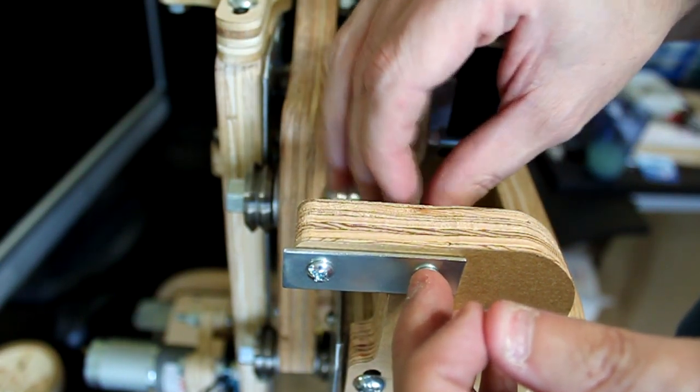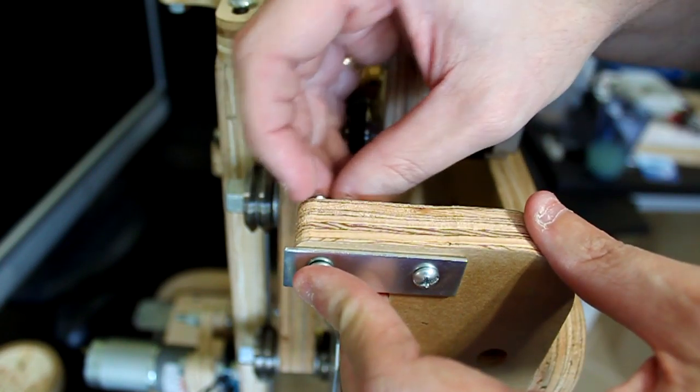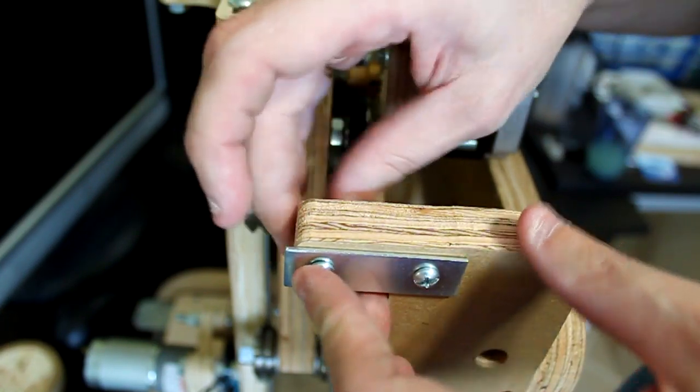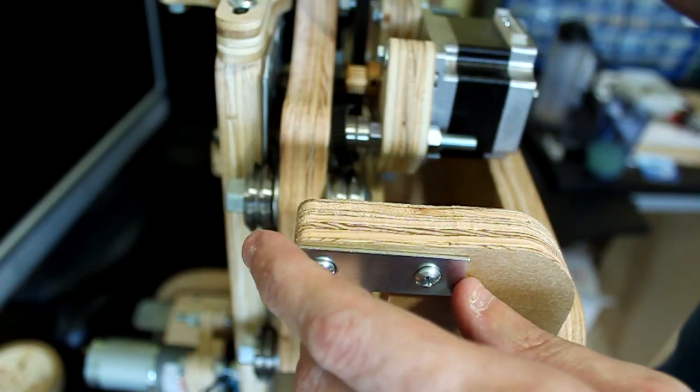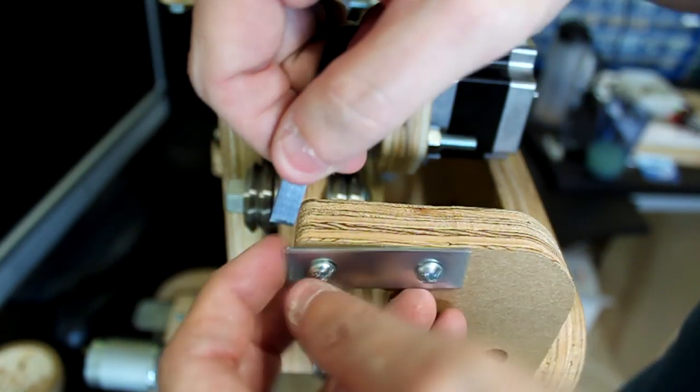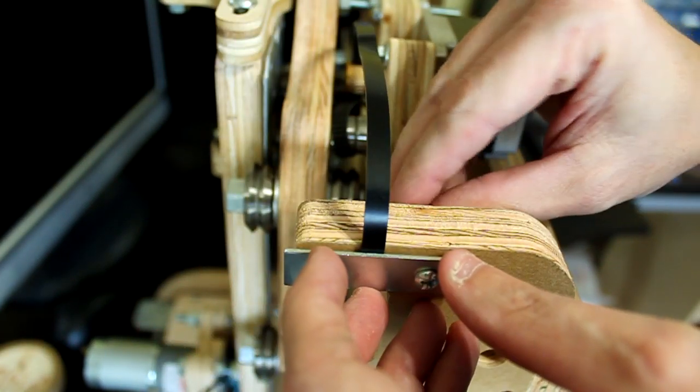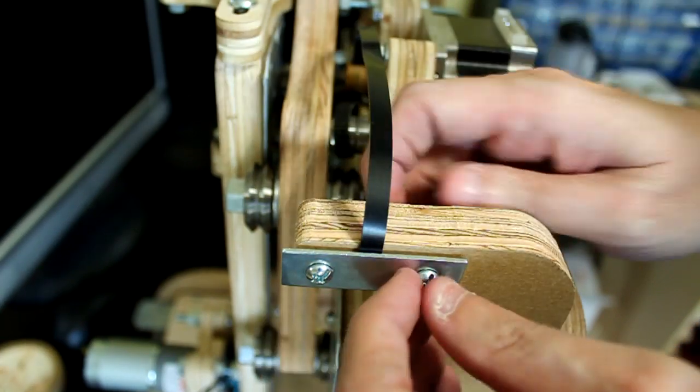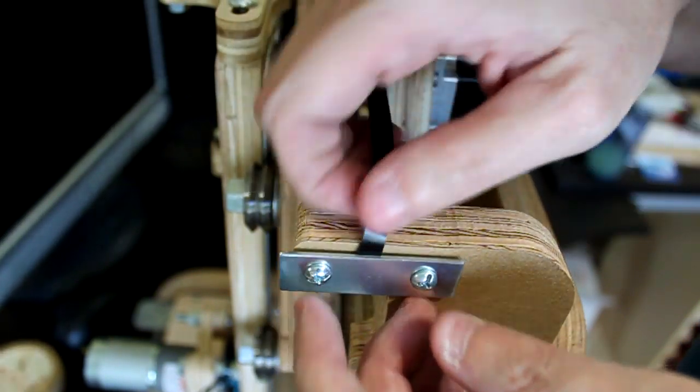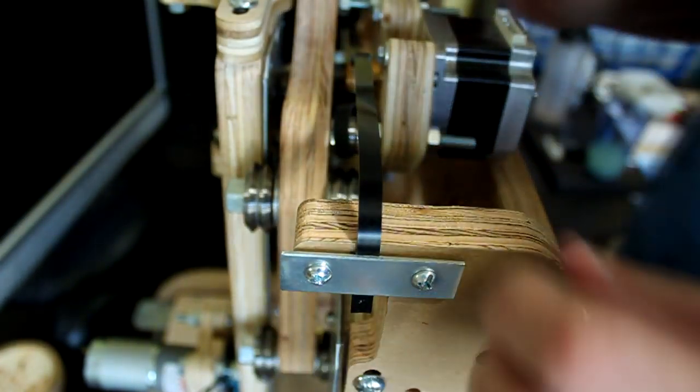Do not tighten since the timing belt will need to be routed between the bracket and the upper structural side. If this is the high side where the timing belt is looped over the pulley, then it will need to be looped over the wood as shown in this part of the video.